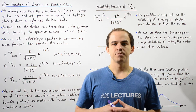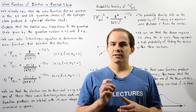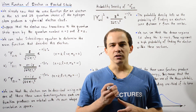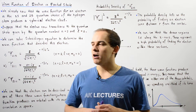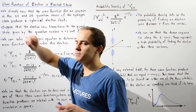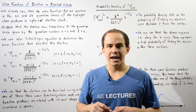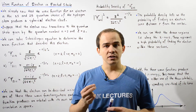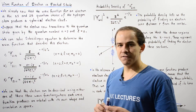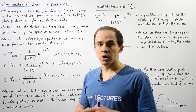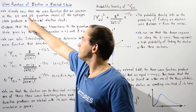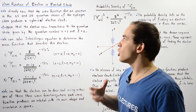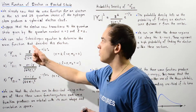Previously we discussed the electron clouds or wave functions produced by an electron in the ground state of the hydrogen atom, given by quantum state 1s, and the excited state given by 2s. We saw that the shape of our electron clouds was in the form of a sphere. Now let's suppose our electron transitions from the quantum state 2s, where 2 is the principal quantum number and s stands for the orbital quantum number l equals 0.